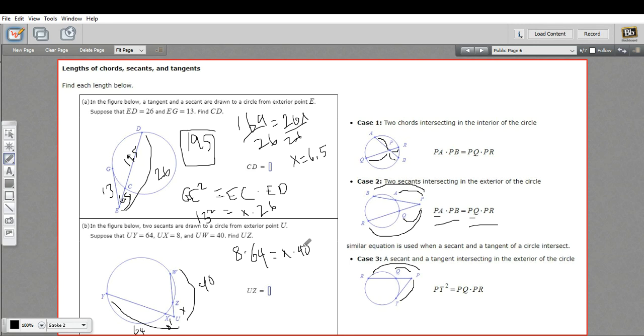So in this case, we want to take 8 times 64, and then just divide that by 40 to get our answer. And on my calculator, that looks like 12.8.